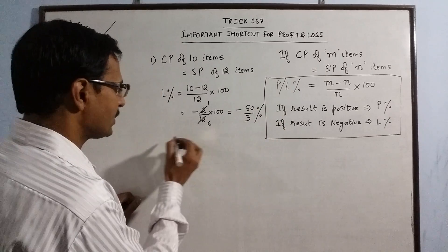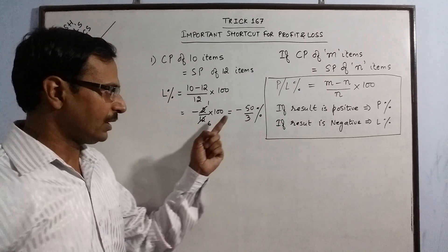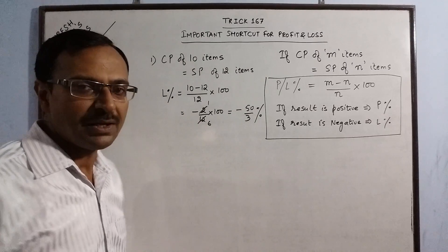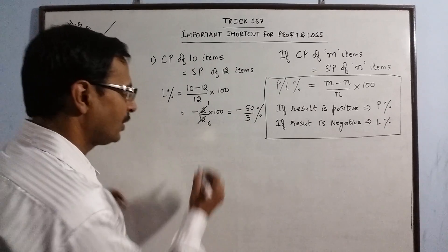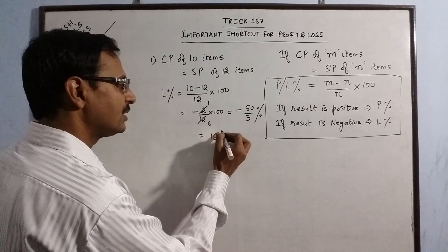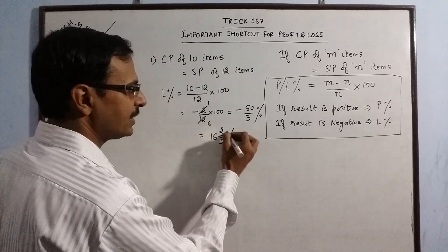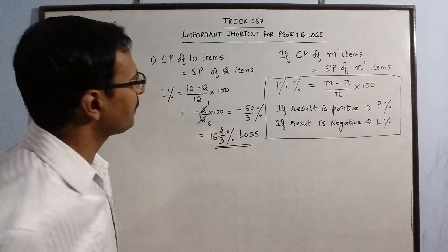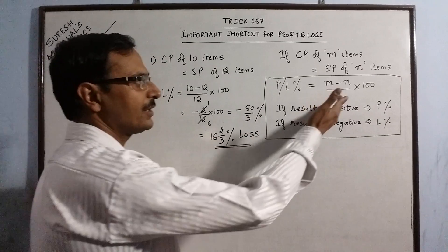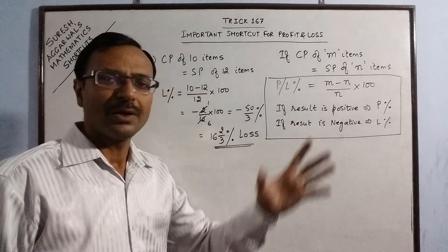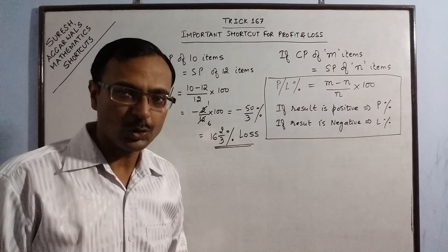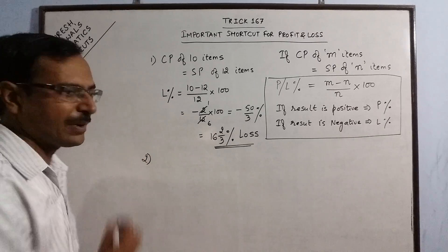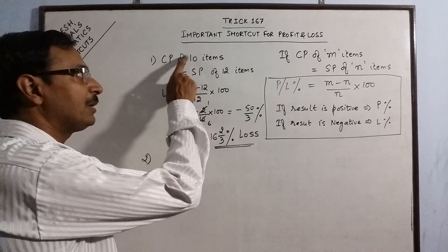Just eliminate negative sign because we will have negative sign implies that we have loss. So, 50 by 3 if you reduce it to mixed fraction, you get 16 2 by 3 percent loss. So, very easy interpretation of this question. Very easy shortcut. And through this shortcut, no formula is to be used in this type of problem. Say, we have one more question. This time, I will take one example in which m will be greater than n.